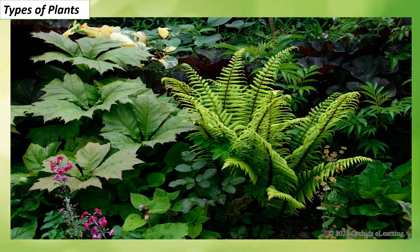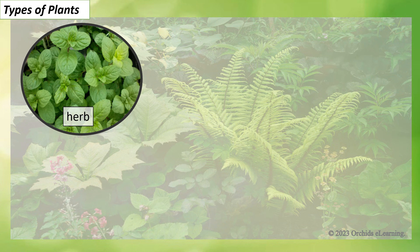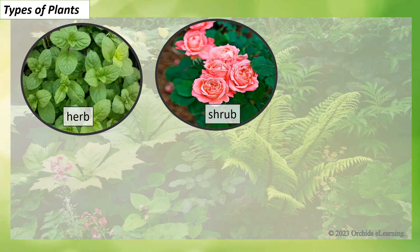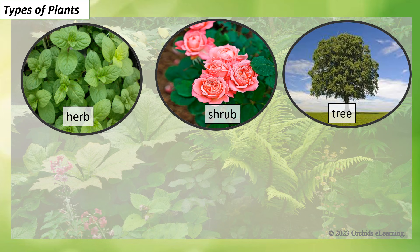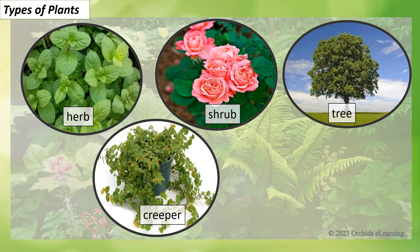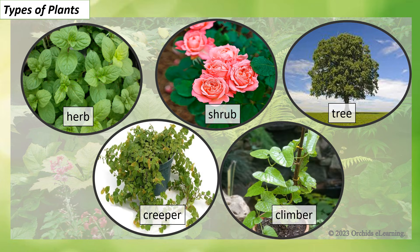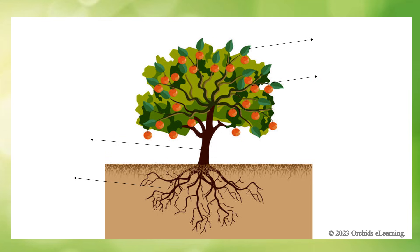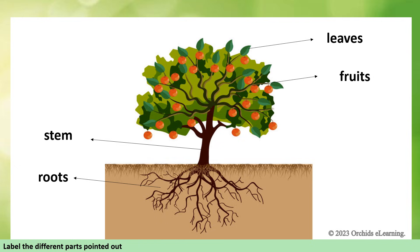We see different types of plants all around us. Based on the size and kind of stem, plants can be divided into herbs, shrubs, trees, creepers, and climbers.